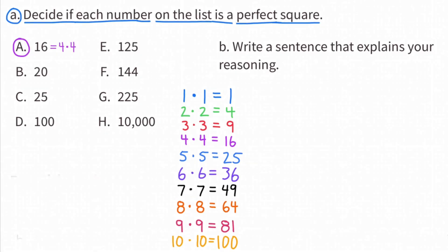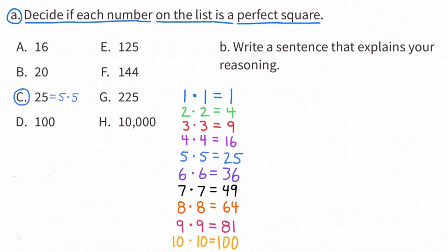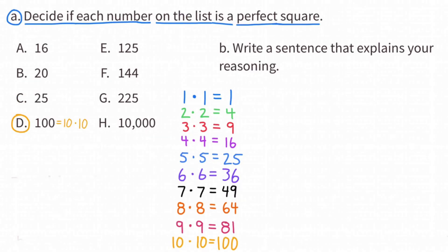A: 16. 4 times 4 equals 16, so 16 is a perfect square. C: 25. 5 times 5 equals 25, so 25 is a perfect square. D: 100. 10 times 10 equals 100, so 100 is a perfect square.